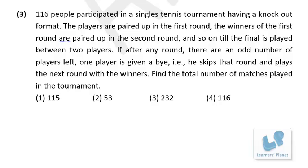116 people participated in a single tennis tournament in knockout format. Players are paired in the first round; winners are paired in the second round, and so on until the final. If after any round an odd number of players remain, one player gets a bye — skipping that round. Find the total number of matches played.